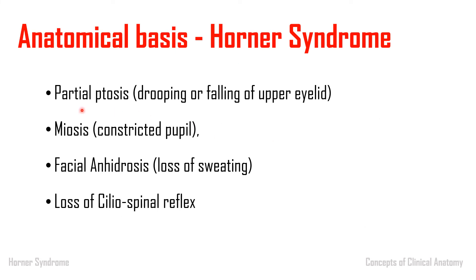Regarding clinical features: there is partial ptosis in Horner's syndrome because upper eyelid movement is also contributed by the levator palpebrae superioris, which is supplied by the oculomotor nerve — that is the major contributor. So ptosis in Horner's syndrome is partial and less severe compared to oculomotor nerve paralysis. Miosis occurs because sympathetic supply provides the dilator pupillae; when disrupted, constriction results. Facial anhydrosis occurs because sympathetic innervation covers the whole head and neck, and the deficit is ipsilateral.